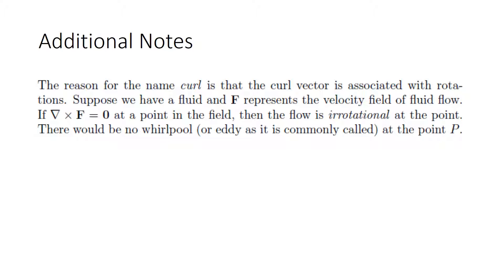The reason for the name curl is that the curl vector is associated with rotations. Suppose we have a fluid and f represents the velocity field of fluid flow. If the curl of f equals zero at a point in the field, then the flow is called irrotational at that point — there will be no whirlpool or eddy at the particular point labeled p.